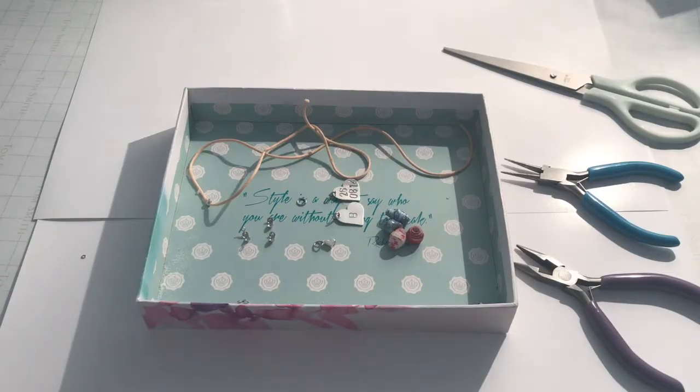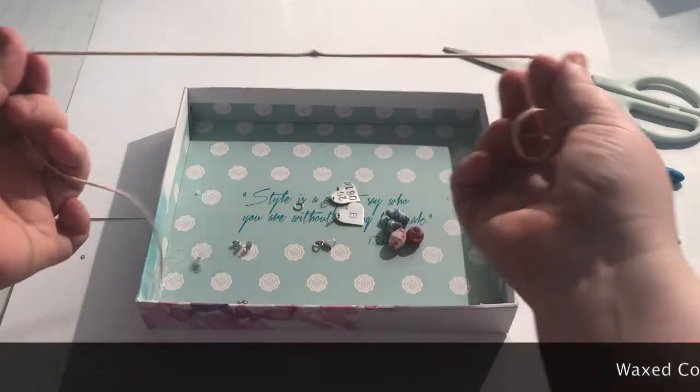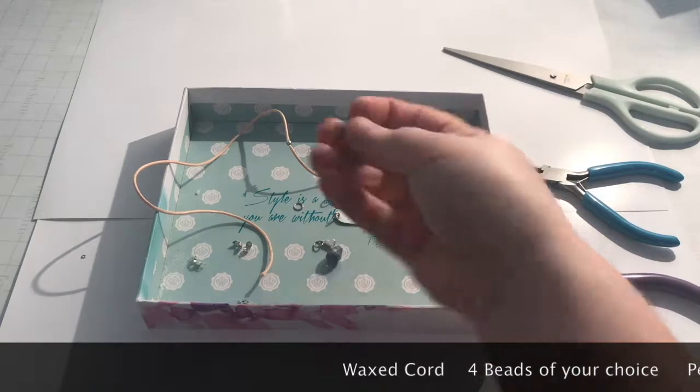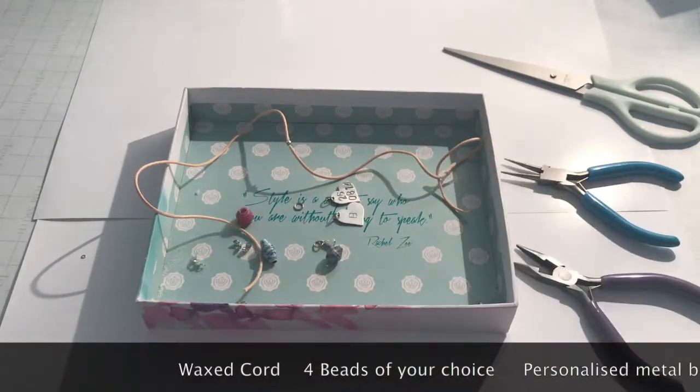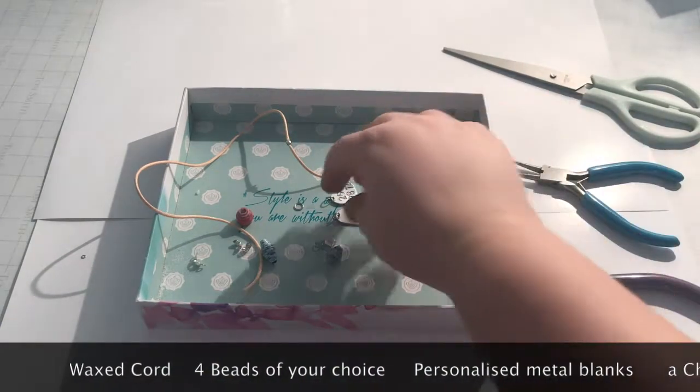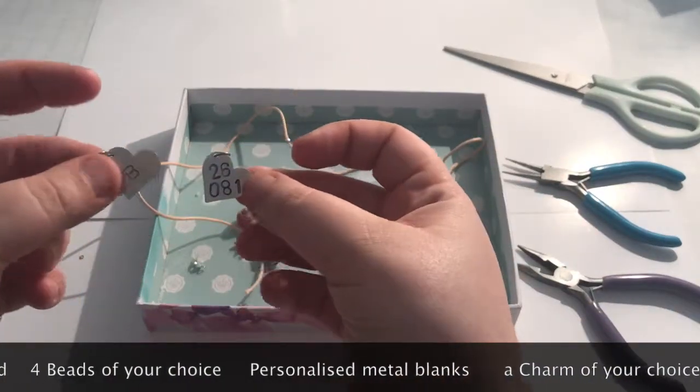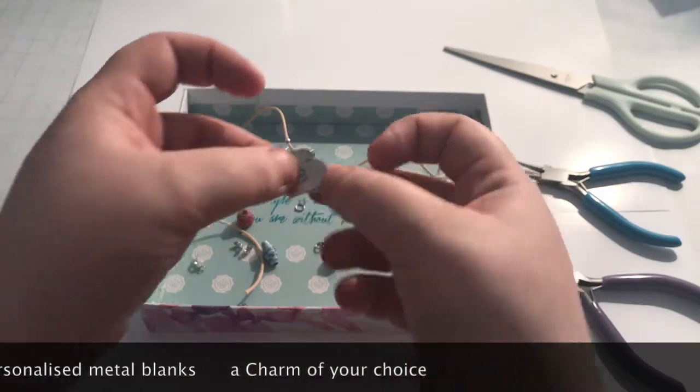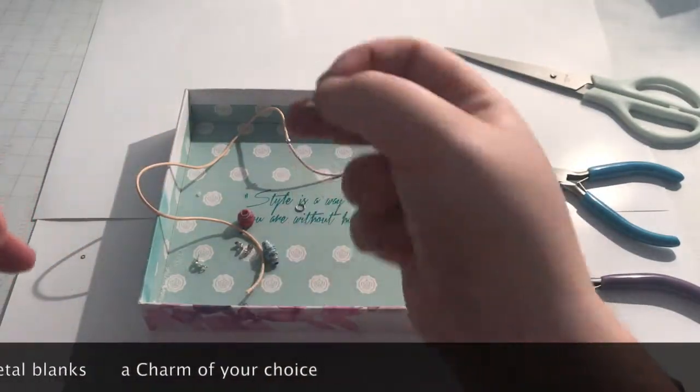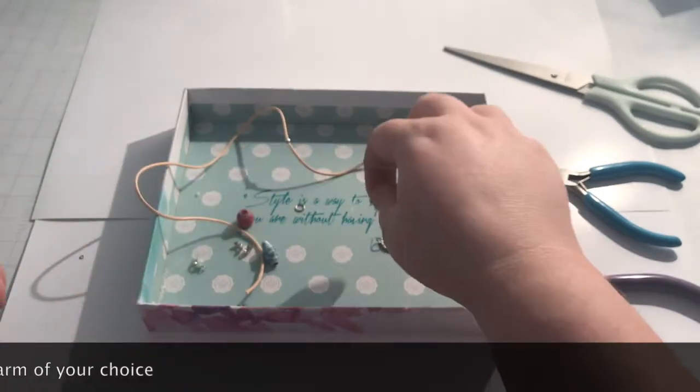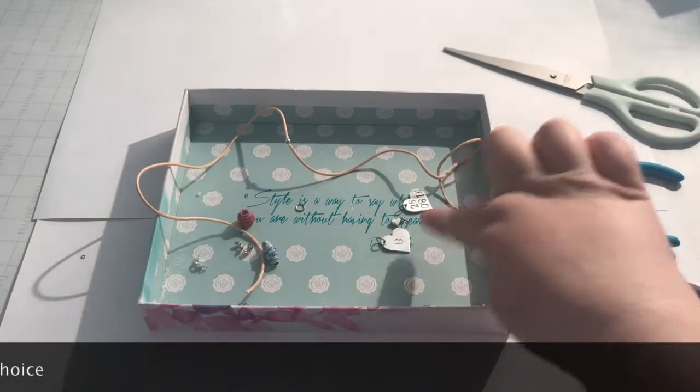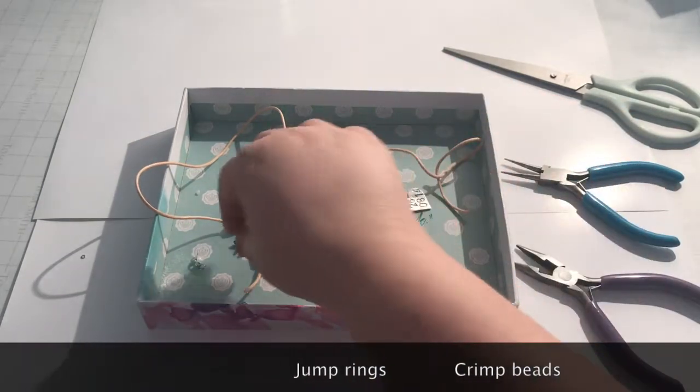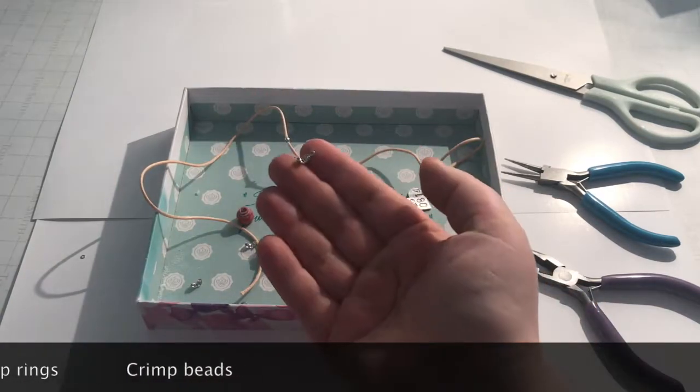To make this bracelet you will need some waxed cord in any color that you want, some beads - I'm using my paper beads, some personalized metal blanks which have been stamped with whatever you want it to say, the charm of your choice and attach all of those with a jump ring. You need an extra jump ring and also you need four crimping beads.